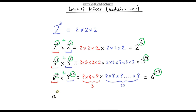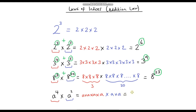This works with any numbers and also with variables. For example, a to the power 4 multiplied by a squared: a to the power 4 is a times a times a times a, and we multiply that by a squared, which is a times a. We're multiplying a by itself six times, so it's a to the power 6. And the rule of adding the indices works: 4 plus 2 gives us 6.